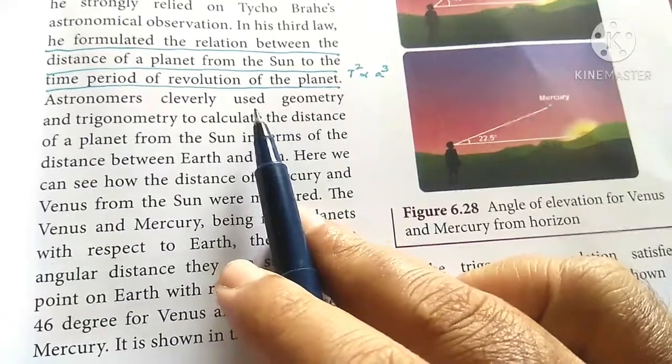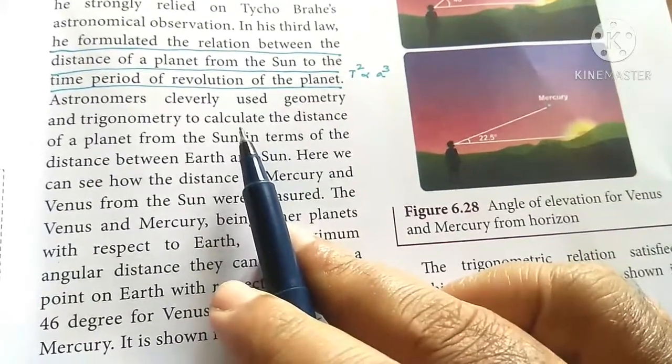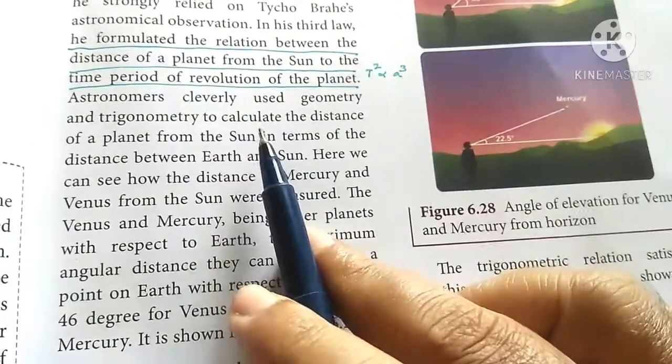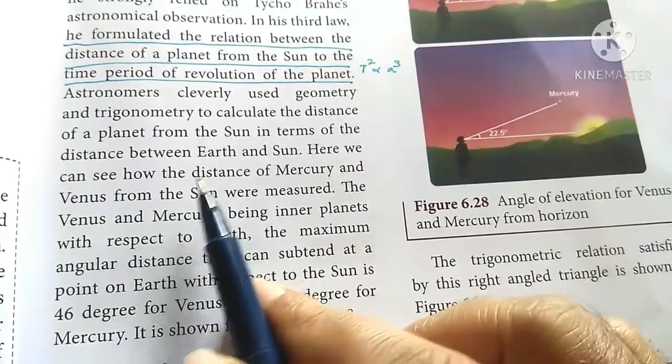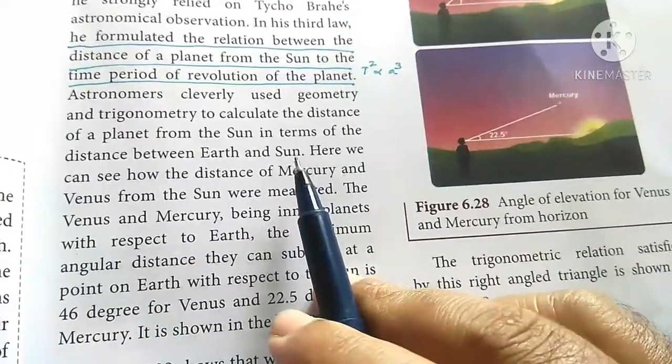Astronomers cleverly used geometry and trigonometry to calculate the distance of a planet from the sun in terms of distance between Earth and sun.